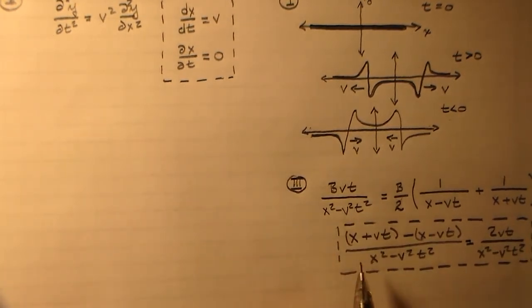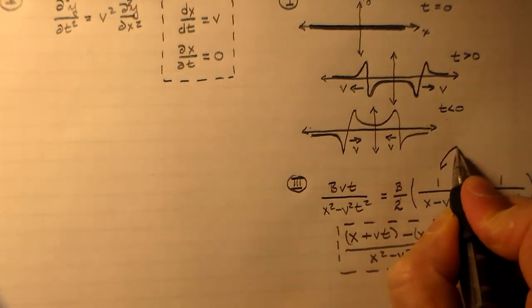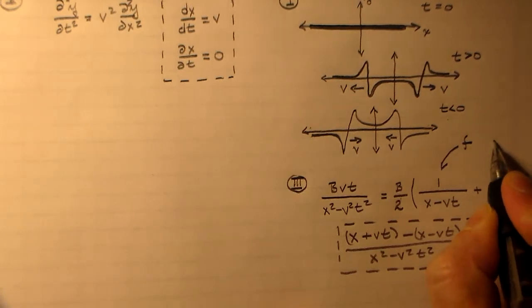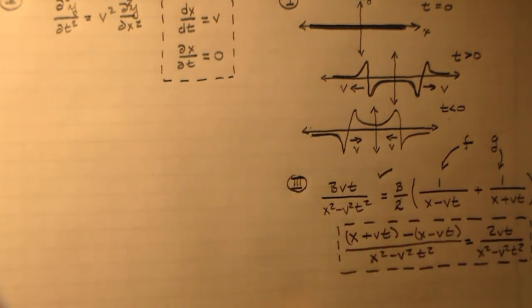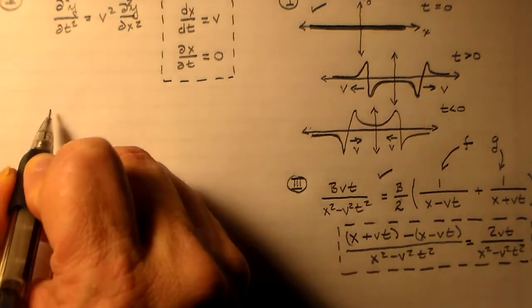So that's going to be equal to 2 vt over x squared minus v squared t squared. So we need to divide this by 2 and multiply by b, and that gives us what we want over here. Alright, so that gives us, that gives us, which one is this? This one's f, right? And this one here is going to be g. So we're good with that, right? We're good with that too. We're cruising. We're doing a great, great job.